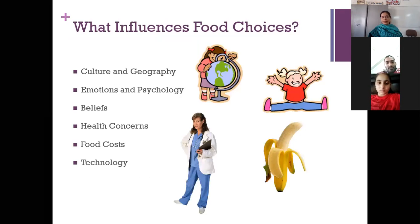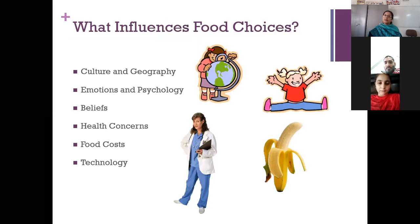What actually influences your food preferences? The first is culture and geography. The second is your emotions and psychology. The third is beliefs. The fourth is your health concerns. The fifth is food costs. And of course, technology. All these things influence your food preferences.